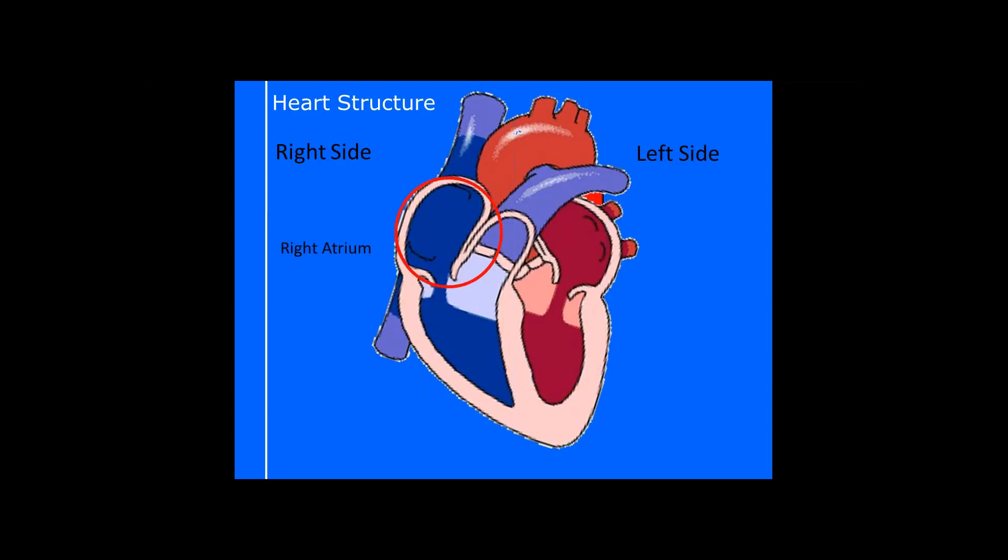Then you've got on the other side, right atrium. Notice again, it's the one right at the top. So you know now that atria are at the top. They're the top two chambers of the heart.